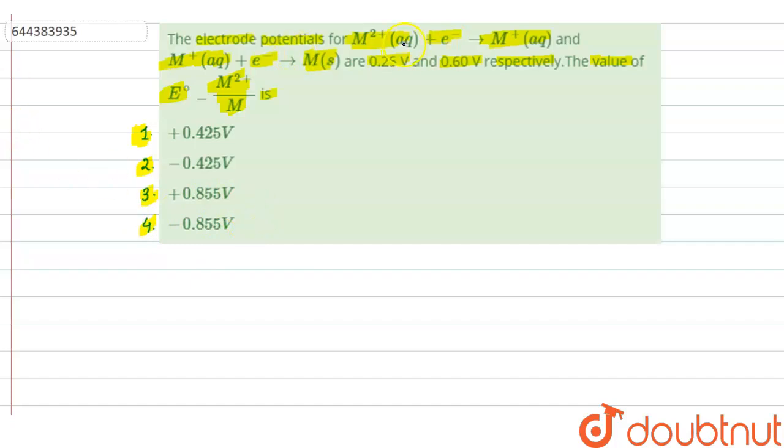So in this question, electrode potentials for these two reactions are given, 0.25V and 0.60V. We have to find out the value of electrode potential for M²⁺ to M. We have here M²⁺(aq) when gaining 1 electron gets converted to M⁺(aq). For this process, the electrode potential value, let it be E⁰₁, is given as 0.25V.